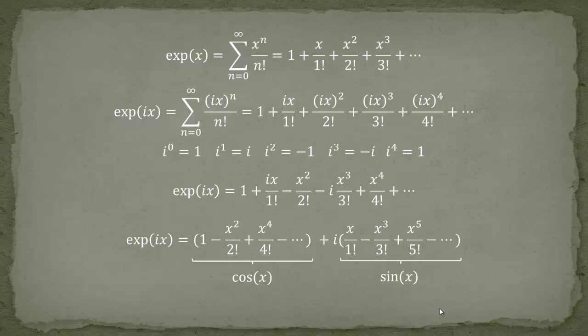Let's recap what we did today. We found the Taylor series of the exponential function. We proved that e is irrational using the Taylor expansion of the exponential function evaluated — or rather, with x equals 1 plugged into the Taylor series. And we derived the famous Euler's formula using only Taylor series. I hope you had fun, and as always, if you have questions feel free to ask. See you guys!